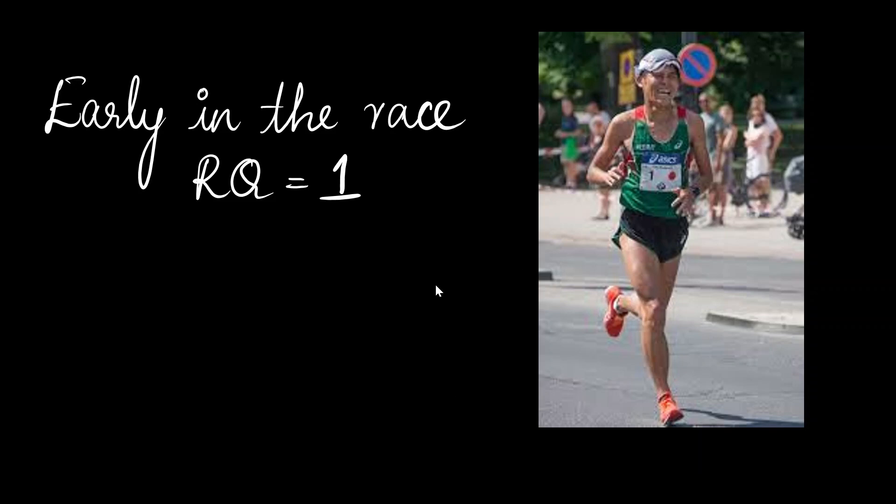But if you again calculate the RQ during the later stages in the race, it's a lower value of 0.7, which immediately indicates that the body no longer has glucose to burn and therefore it has switched to fat as its primary metabolic fuel. This switching in the fuel source represents something called metabolic flexibility that we see in the body of athletes.